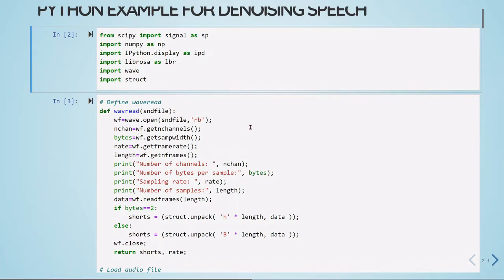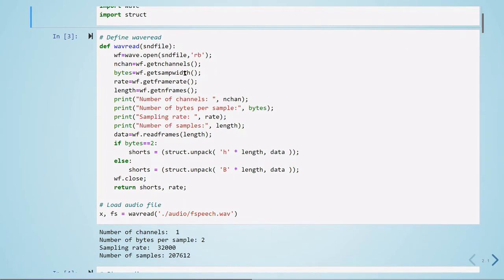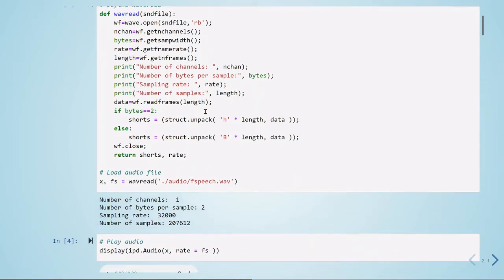So here we're defining this WaveRead function. It takes as an argument a sound file, so we call wave.open sound file. Then we have these parts here where we're getting the number of channels, getting the samples, the sampling rate, number of bytes per sample. Here we're plotting: it's mono, one audio channel, two bytes per sample, 16 bits, sampling rate is 32 kHz, and this is the length of our audio.